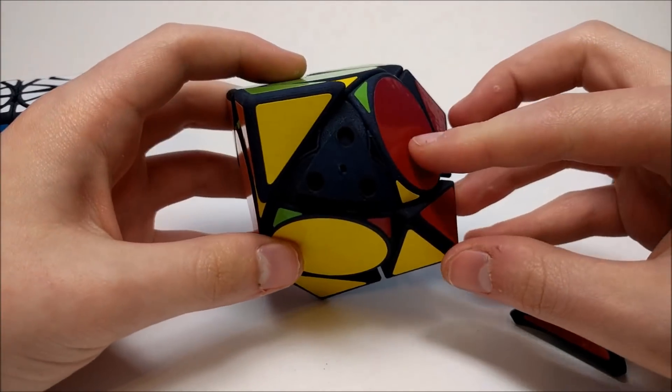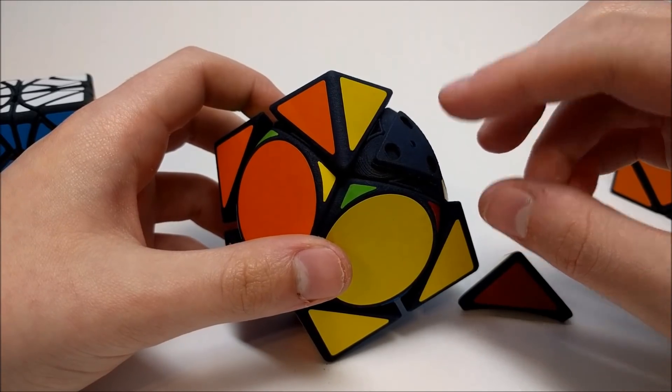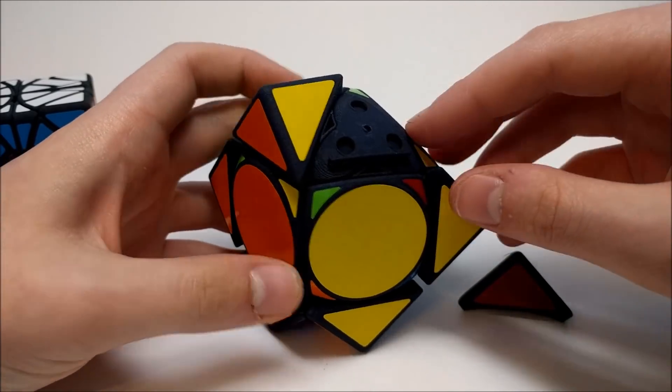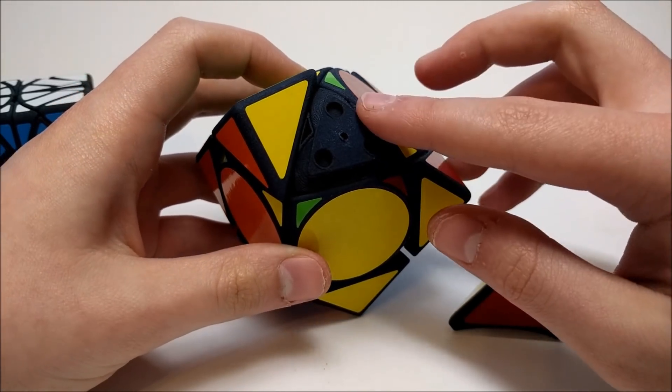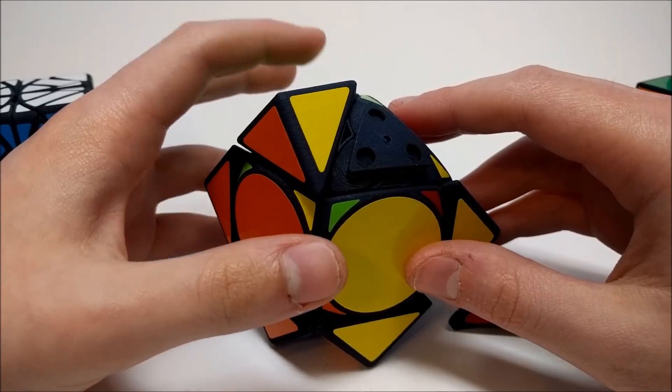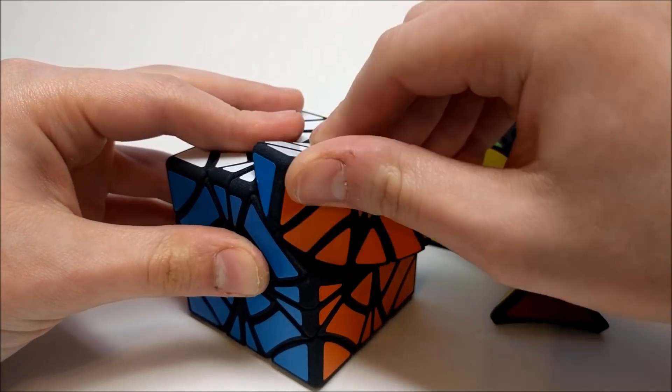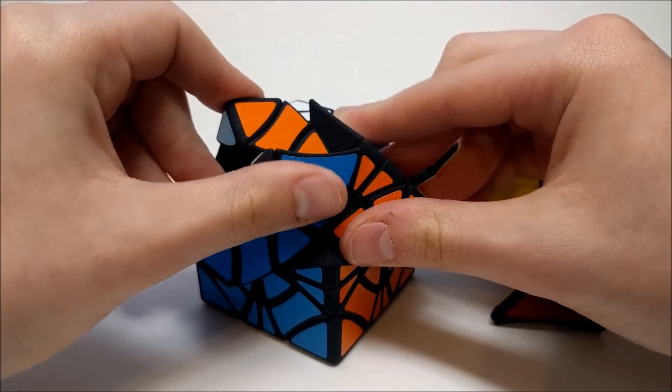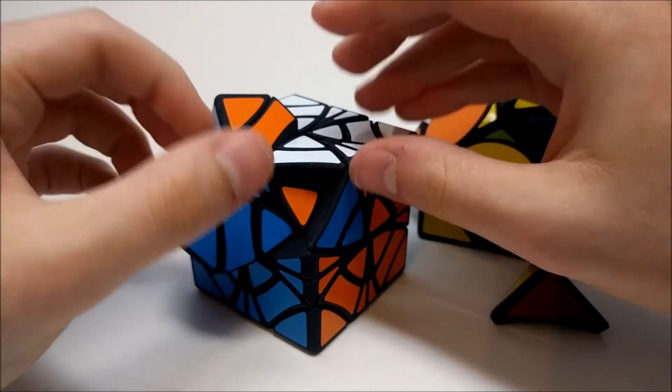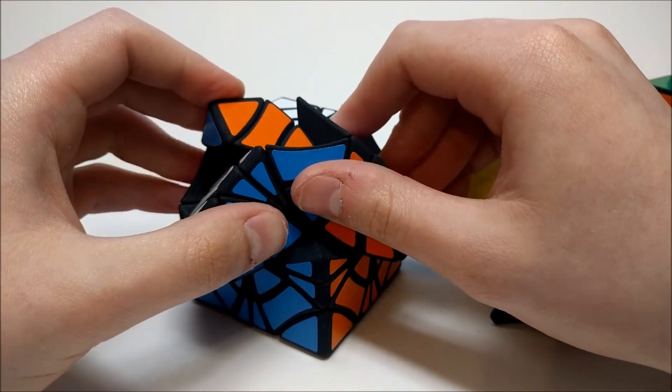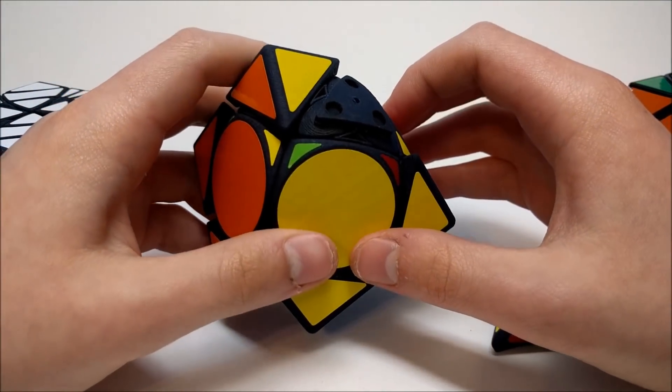I was thinking it might be possible to make a plus version of this puzzle, but then again, that wouldn't really matter because you can't actually... One sort of face, if you could call it, one corner right here, can't really interact with any other corner partway through a turn, whereas on the Combo Copter Plus you can do things like this. You can have two different grips or axes sort of interacting with each other. You can't really do that on this puzzle, so I don't really know if a plus version would be possible or feasible.